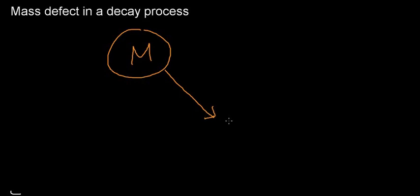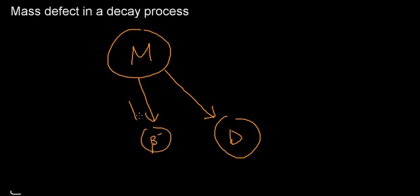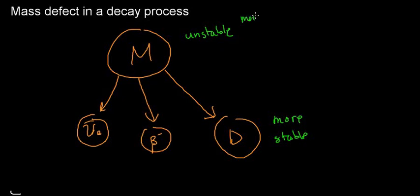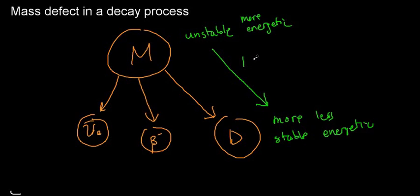Let's get started with mass defect. In a typical decay process, I have my mother nucleus — let's say it's a beta-negative decay — and I have my daughter nucleus. In beta-negative decay, we're emitting a beta-negative particle, which is an electron, and an electron anti-neutrino. The mother nucleus is unstable and it's going to a more stable state. I say 'more stable' because the daughter nucleus may or may not be radioactive itself. Whenever we go from an unstable to a more stable position, we're going from a more energetic to a less energetic state.